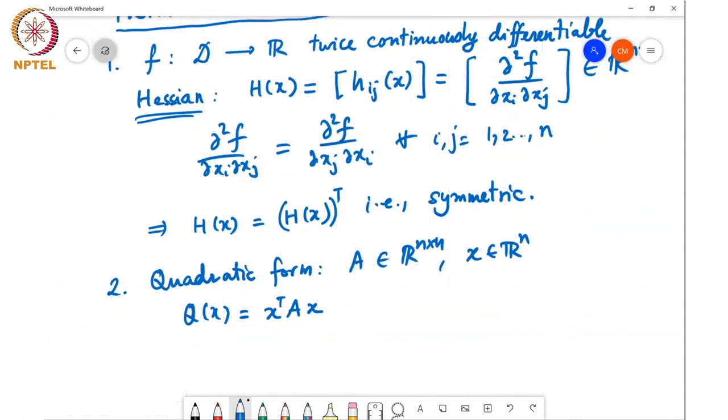Note that we can always write A as one half of (A + A^T) plus one half of (A - A^T). This can always be written. Basically, half A transpose cancels with minus half A transpose, and half A and half A add up to give you A.